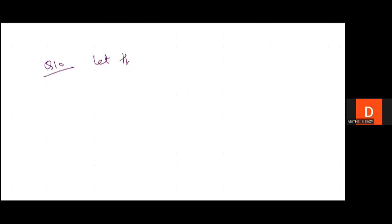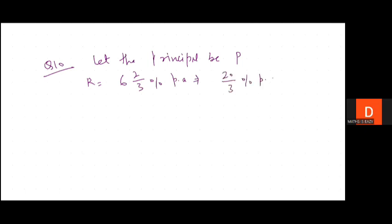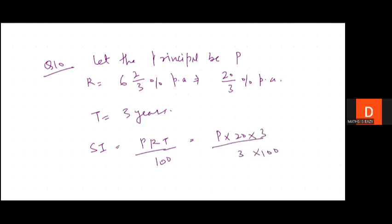For question 10, let the principal be P (unknown). Rate of interest = 6⅔% = 20/3% per annum. Time = 3 years. Simple interest = P × (20/3) × 3 / 100. Solving: SI = P/5.